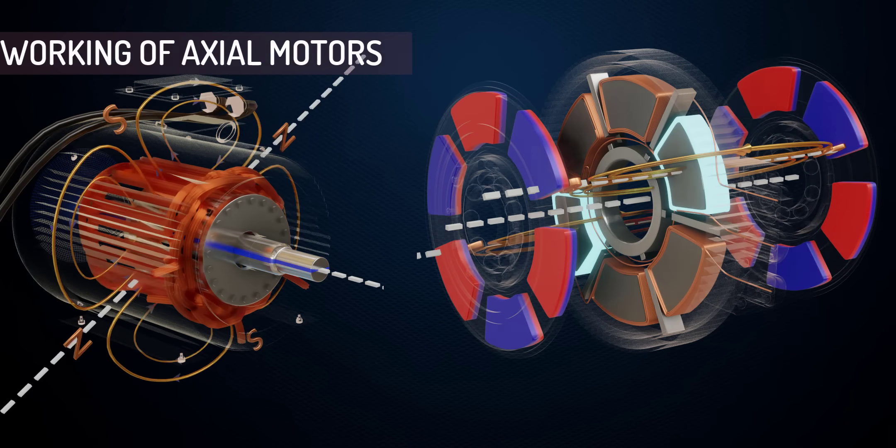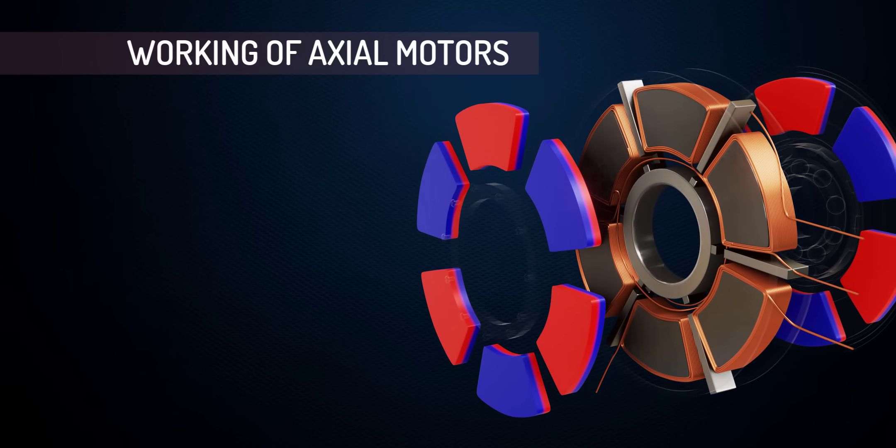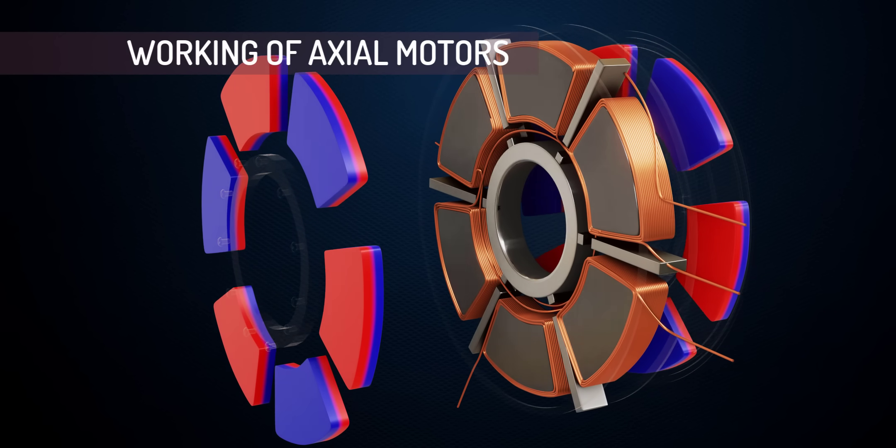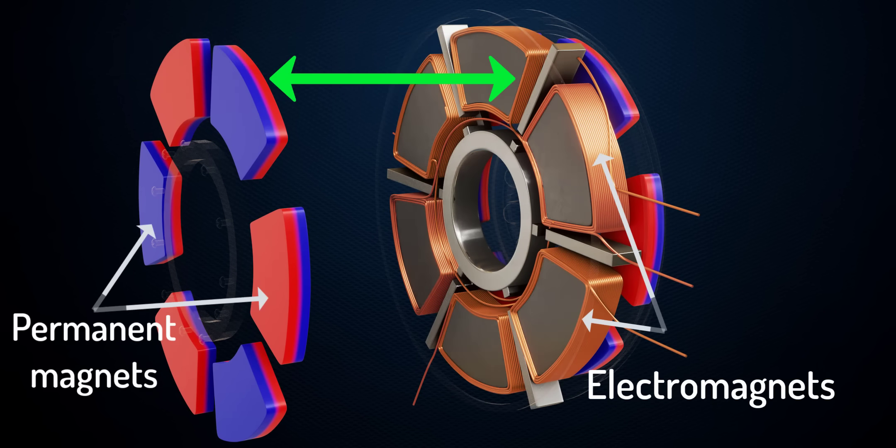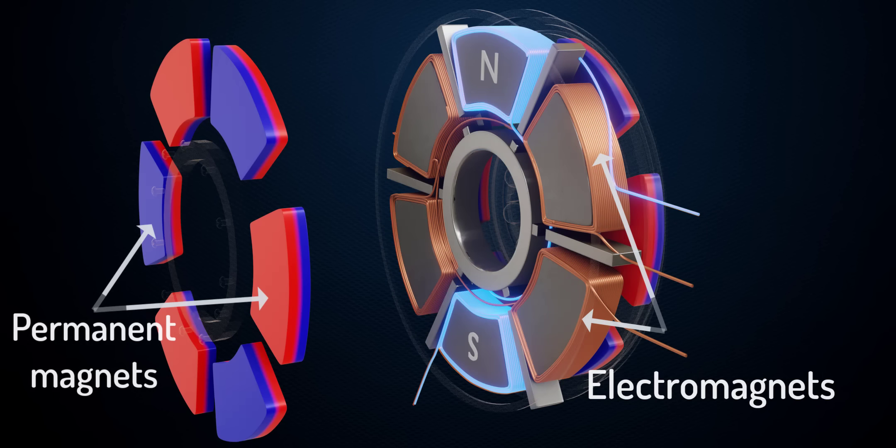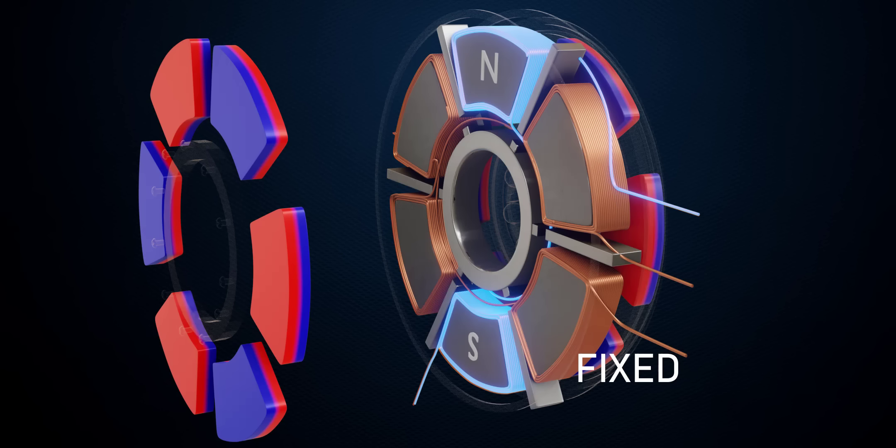Now let's see how the axial flux motor actually works. The axial motor's operation is based on the interaction between the permanent magnet and the electromagnets. When coils are energized, they become electromagnets. The most common design of axial flux motors have fixed coils and freely rotating permanent magnets.